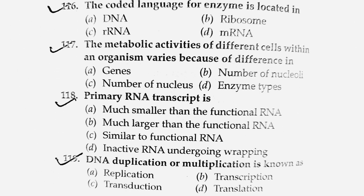Next question: The coded language for an enzyme is located in — DNA, ribosomal rRNA, or mRNA (messenger RNA)? The answer is DNA — deoxyribonucleic acid. Option number A.